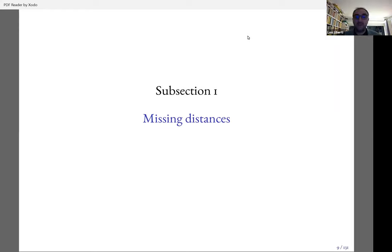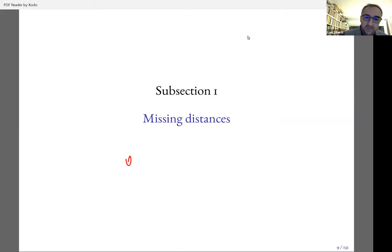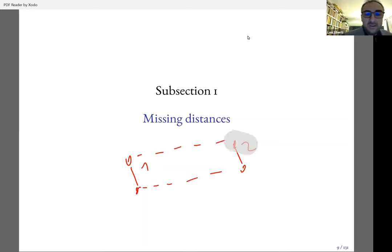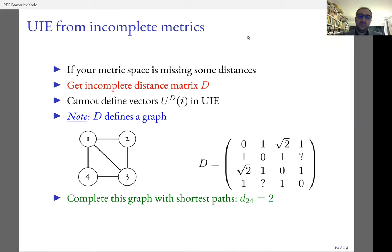Usually in practice we don't have every distance. You look at two pairs of different people and one pair has a distance of one — a unit of difference — and another pair has a difference of two, doubly different. But you don't know how to evaluate the other pairs — those are the missing distances. So what we're going to look at now are heuristic methods that fall under the name of distance matrix completion: you have an incomplete distance matrix D, and you only know certain components while others are unknown.